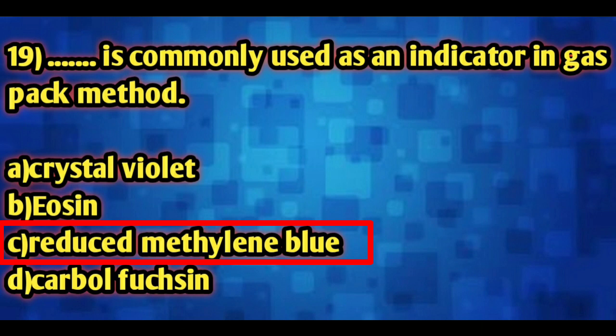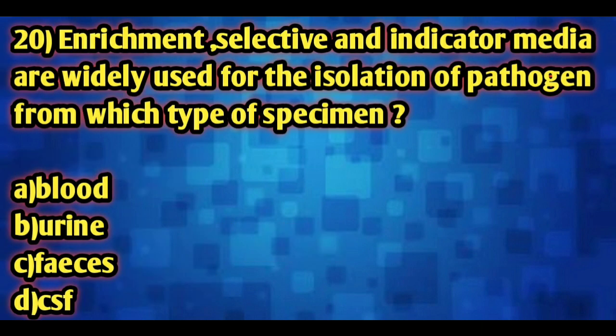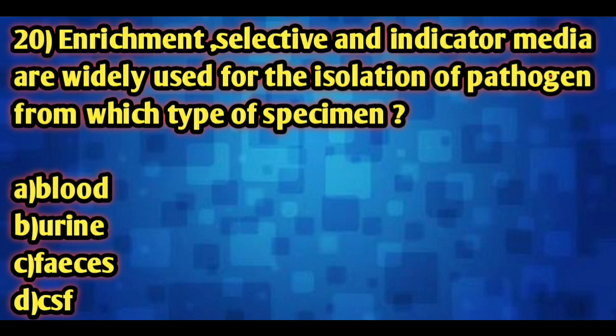Question number 20, our last question: enrichment, selective, and indicator media are widely used for the isolation of pathogens from which type of specimen? The options are: blood, urine, feces, and cerebrospinal fluid. The right answer is Option C — feces. Enrichment, selective, and indicator media are used to isolate pathogens from feces samples.